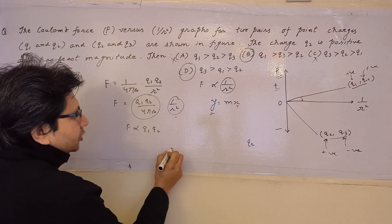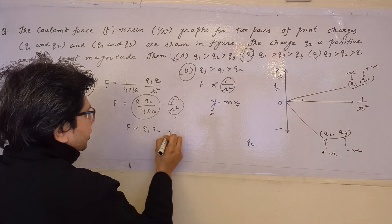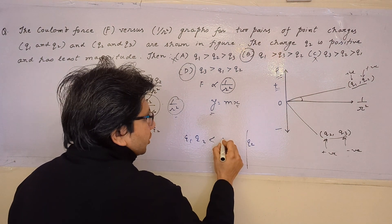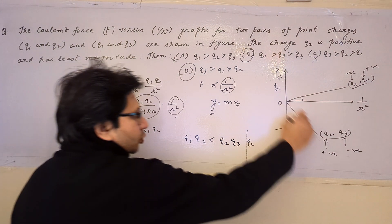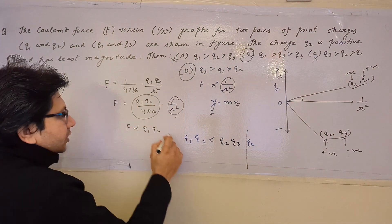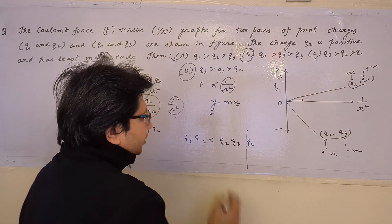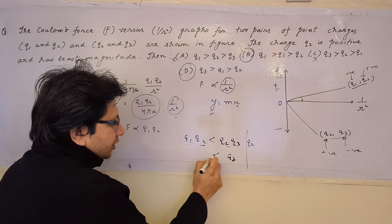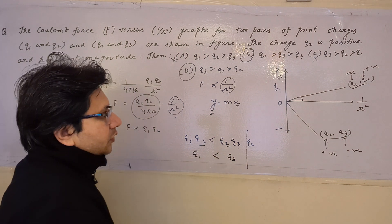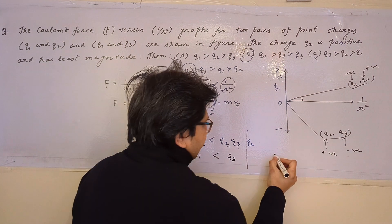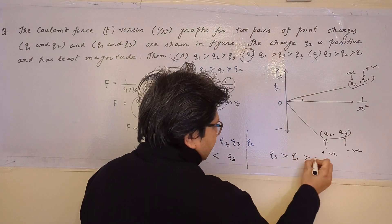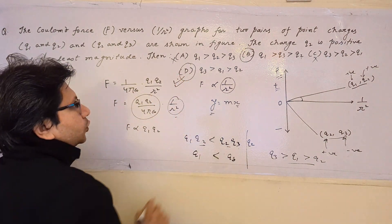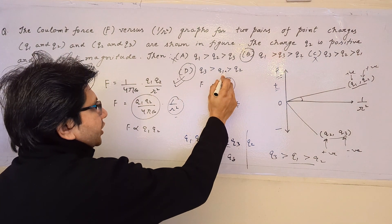Since the slope corresponding to q2·q3 is greater than the slope corresponding to q1·q2, the product q2·q3 > q2·q1. The common factor is q2, so by the inequality rule, q3 > q1. Therefore, the order of magnitudes is q3 > q1 > q2, which matches option (d): q3 > q1 and q1 > q2. Option (d) is correct.